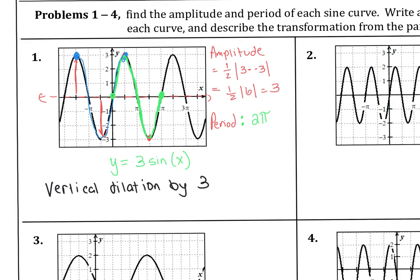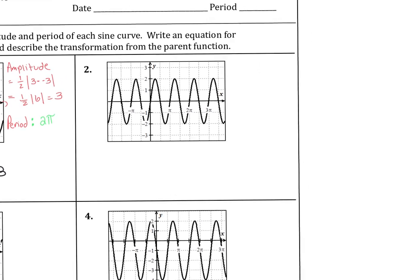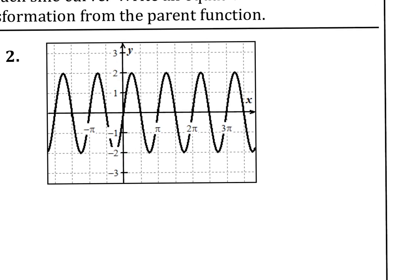Now let's look at number 2, which is a little different. The max is 2 and the min is negative 2, so our amplitude is 2. For the period, let's start here — you go up, then down, and we repeat the y-value. The period is actually now π, not 2π.